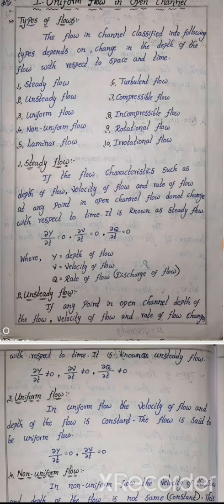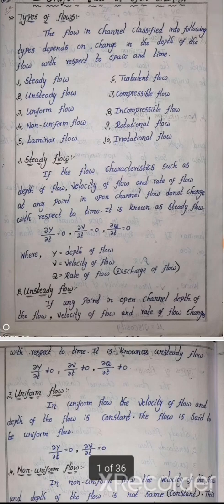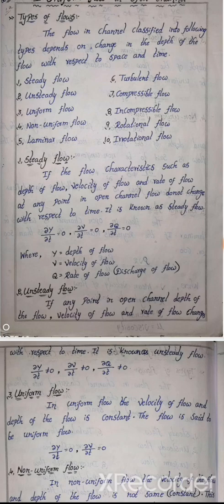What is steady flow? If the flow characteristics — such as depth of flow, velocity of flow, and rate of flow (that is, discharge) — at any point in an open channel do not change with respect to time, it is known as steady flow. The three flow characteristics are flow depth, flow velocity, and flow discharge.